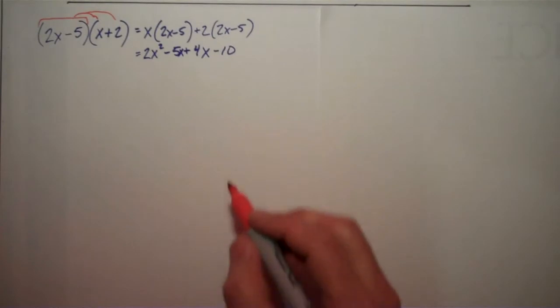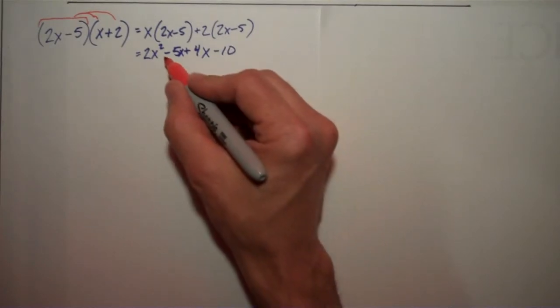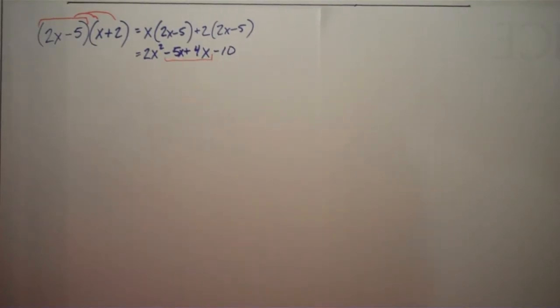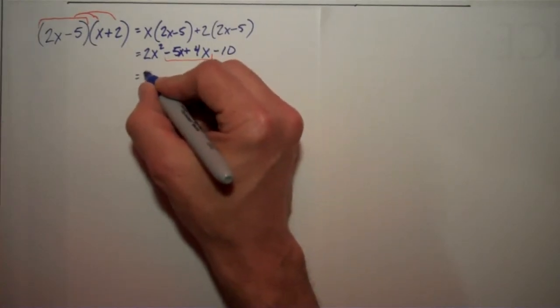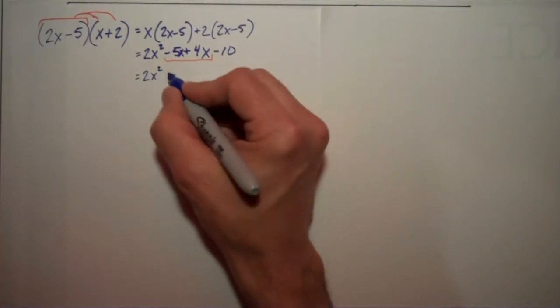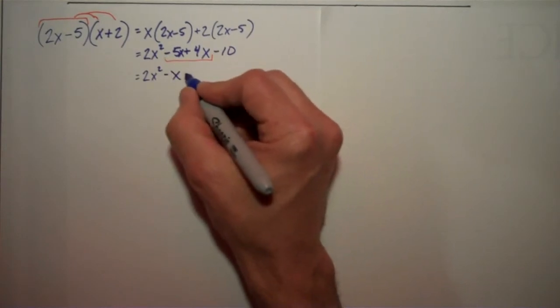Now all I have to do is combine these like terms here. And what I see I have is 2x squared minus x minus 10.